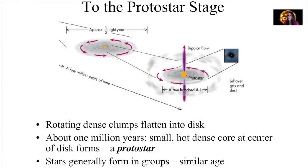You've got these rotating dense clumps of material. They start to contract on themselves, they start to spin, and they flatten into a disk. And in about one million years, after that gas started to condense and contract on itself, condensing, contracting, spinning up, that's the conservation of angular momentum, you can create small, dense cores at the center of these disks to form a protostar. That's the baby star. And generally these stars form in groups, and those groups of stars tend to be of similar ages.